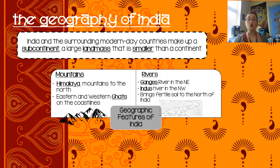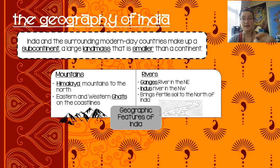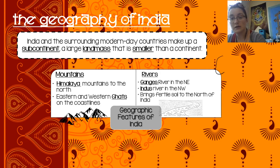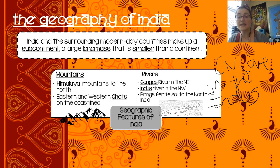We also have two rivers. We have the Ganges River in the northeast and the Indus River in the northwest, and we're going to practice drawing these. These rivers bring fertile soil to the north of India. Civilization — you can shorten that to 'civ' — came in the Indus, meaning that our first civilizations are going to start in that Indus River. That fertile soil is the really important part, because then we know we can farm.